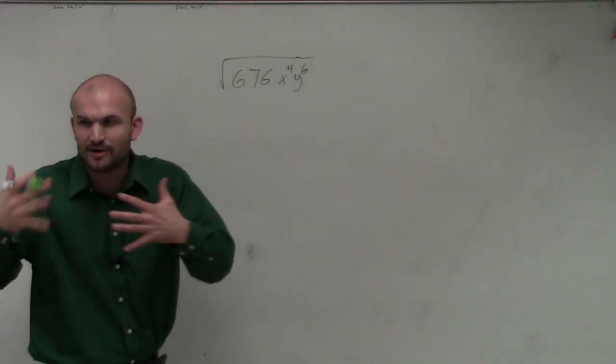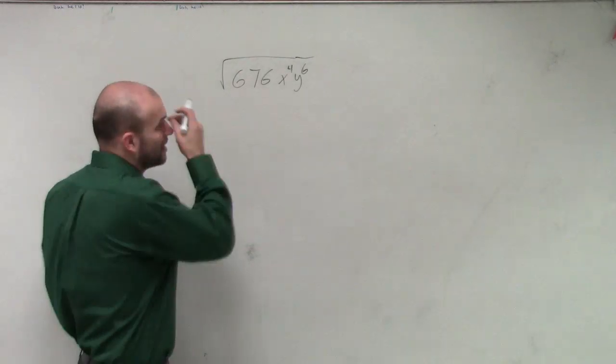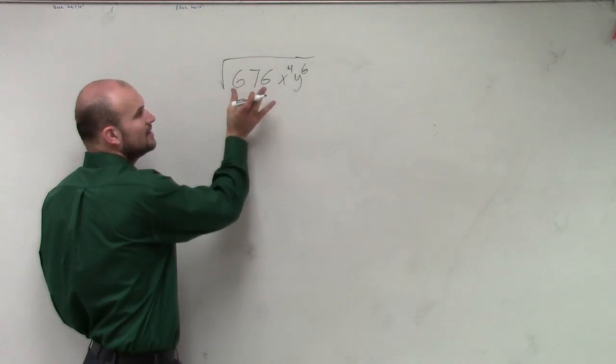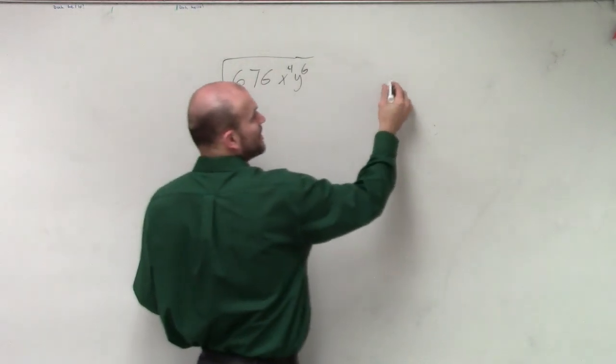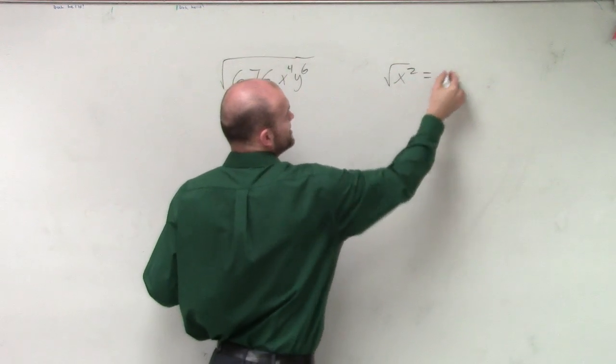So in this problem, I just want to make sure I rewrite that so we know exactly what we're talking about. Remember, we want to write everything in terms of squared, because the square root of x squared equals x.